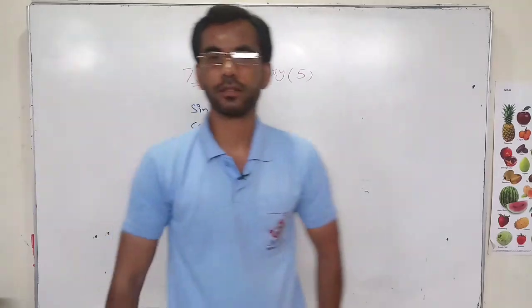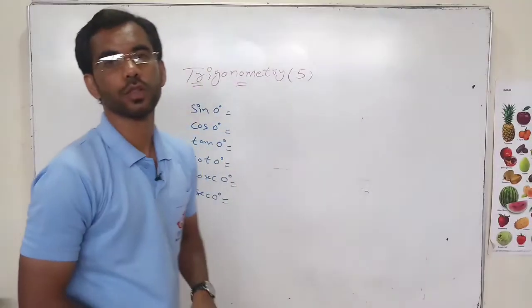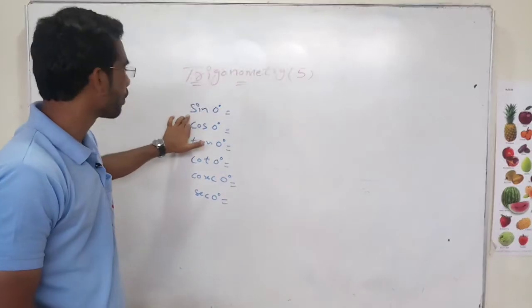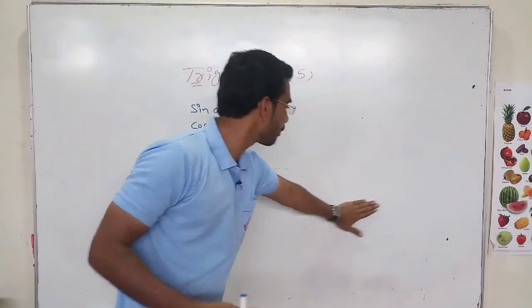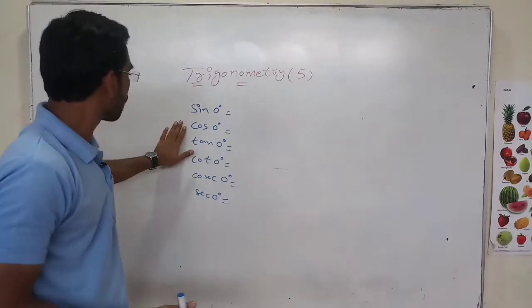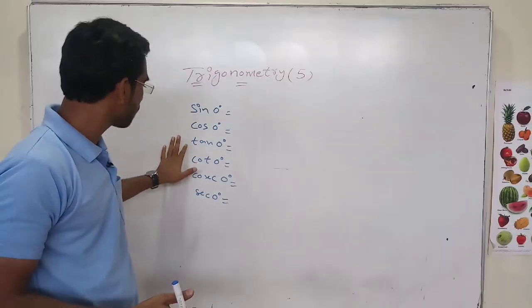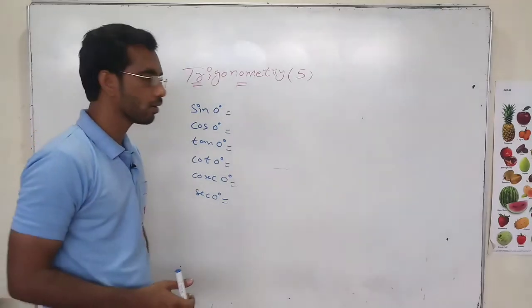Hello my dear students, today we are going to see the proof of 0 degrees — how cos 0, tan, cot, cosec, and sec at 0 degrees will be derived.